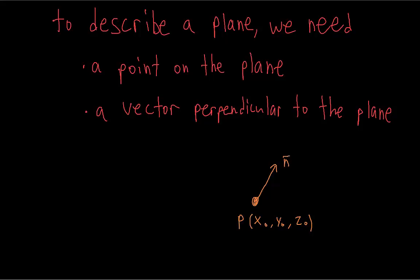If you were given a vector parallel to the plane, then you could draw almost an infinite number of different planes containing that vector and the point. That's why we need a vector perpendicular to the plane instead of parallel, like with lines. We're going to call this vector, which is perpendicular to the plane, the normal vector.